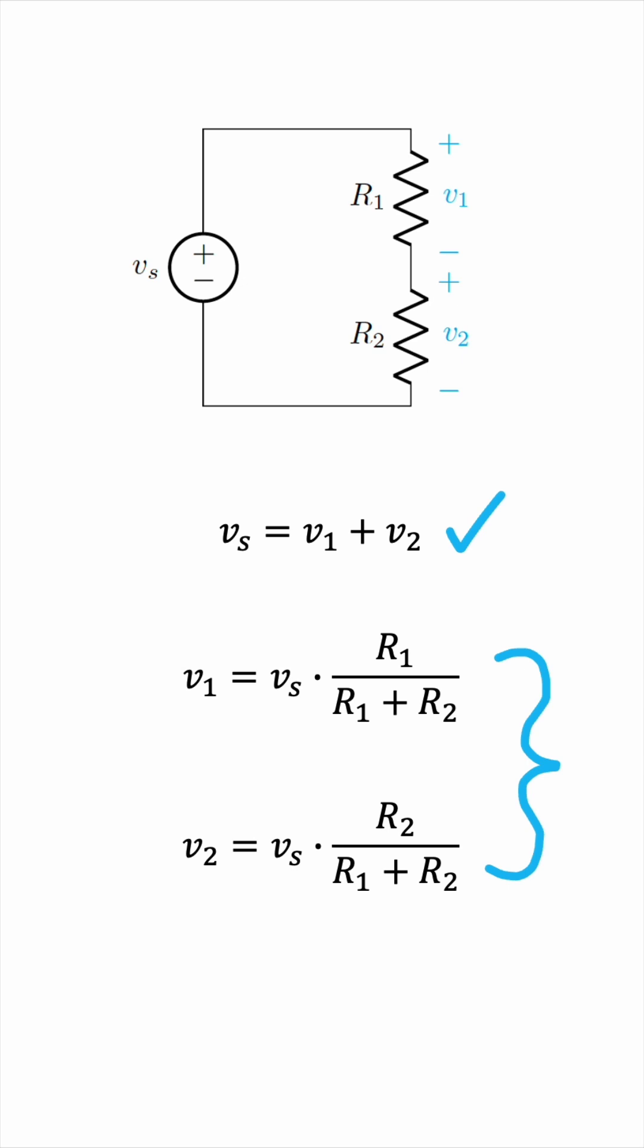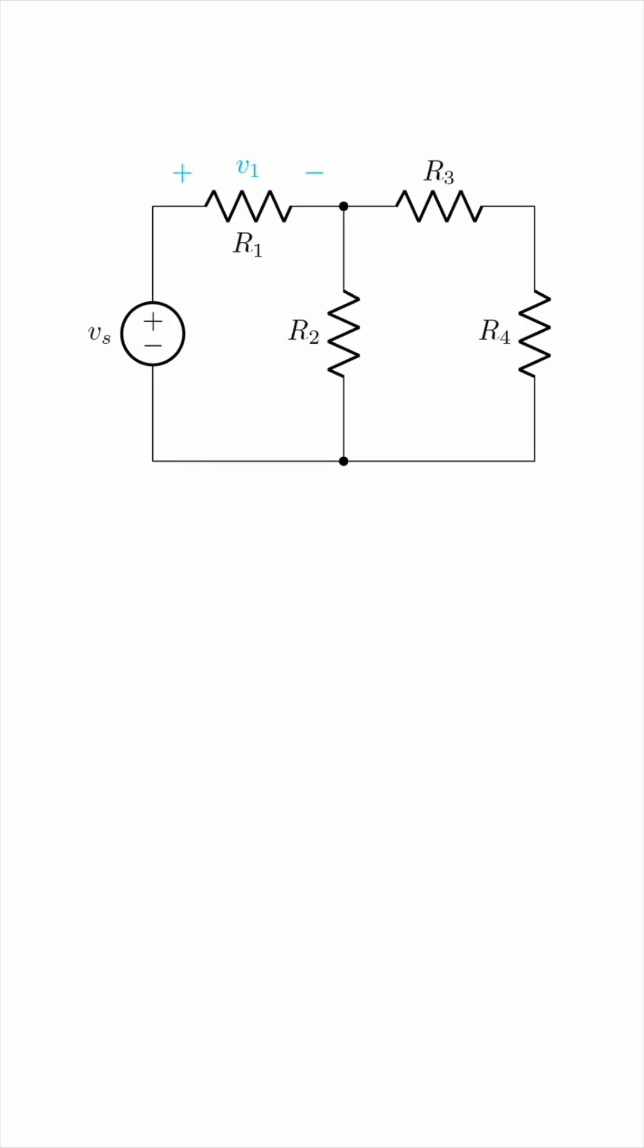The voltage divider rule is not only useful when you have two resistors in series like that. Say you had a more complicated connection like this, and you wanted to find V1.